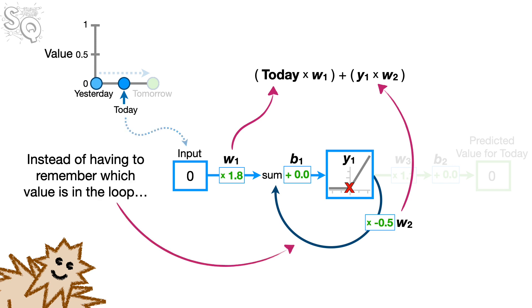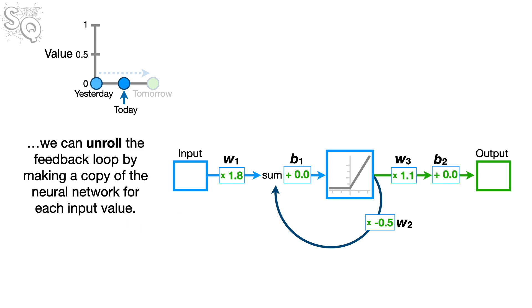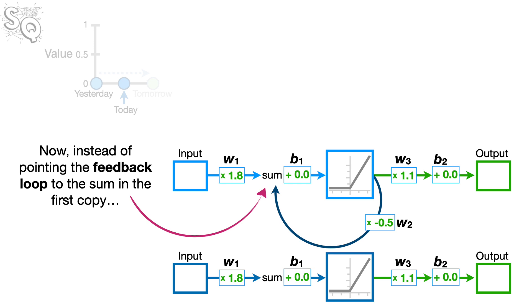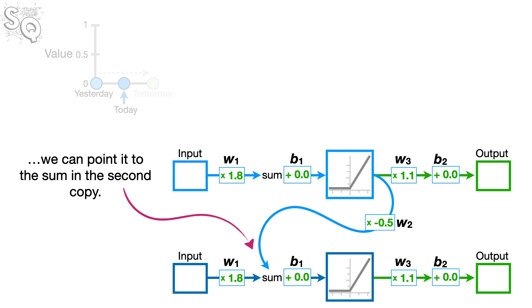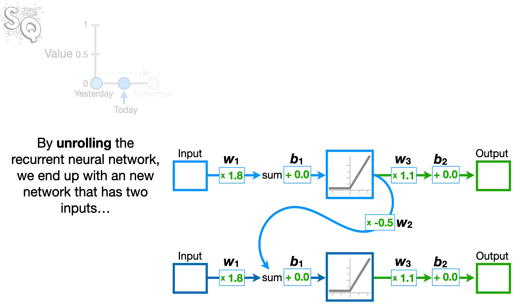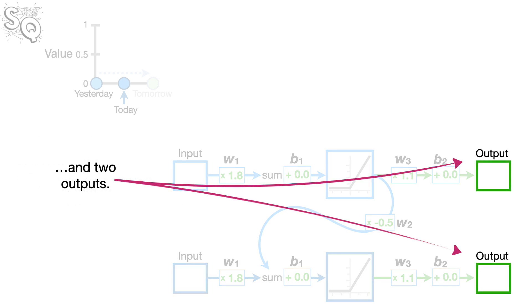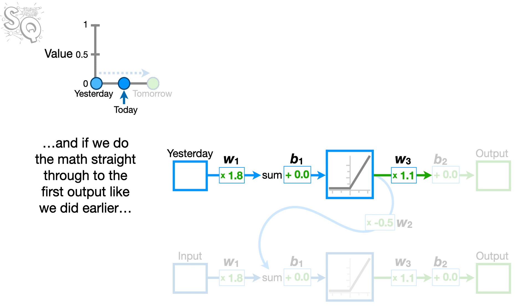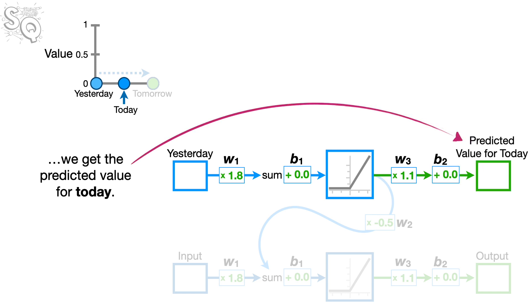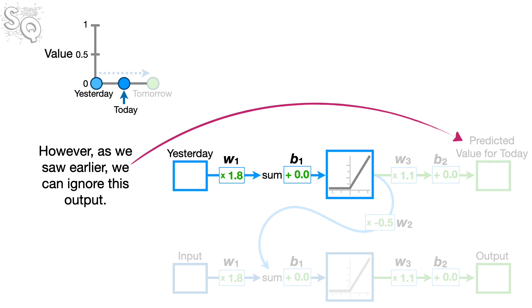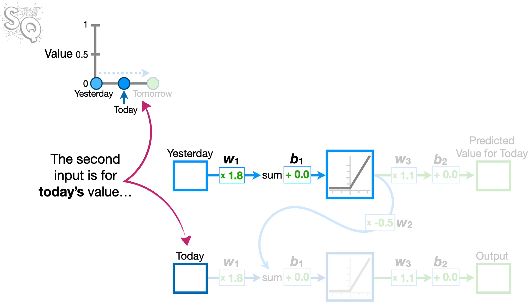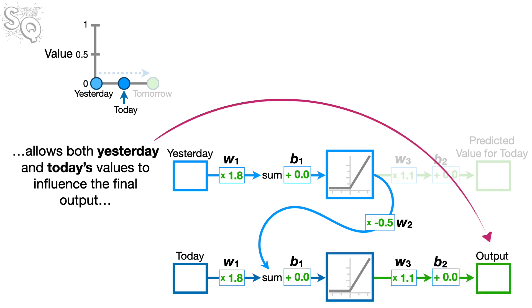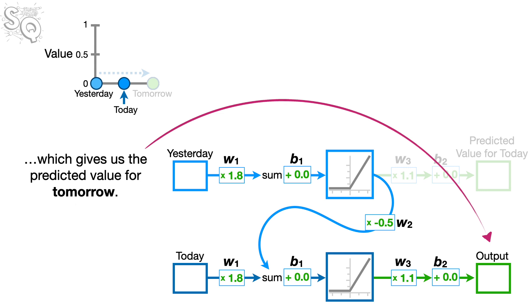Instead of having to remember which value is in the loop and which value is in the input, we can unroll the feedback loop by making a copy of the neural network for each input value. Now, instead of pointing the feedback loop to the sum in the first copy, we can point it to the sum in the second copy. By unrolling the recurrent neural network, we end up with a new network that has two inputs and two outputs. The first input is for yesterday's value. And if we do the math straight through to the first output like we did earlier, we get the predicted value for today. However, as we saw earlier, we can ignore this output. The second input is for today's value.